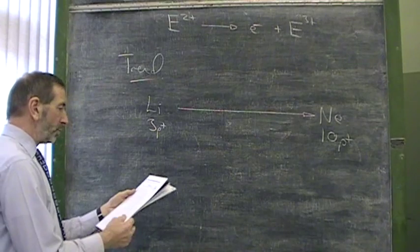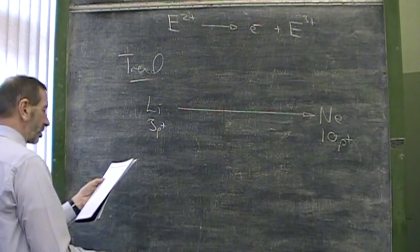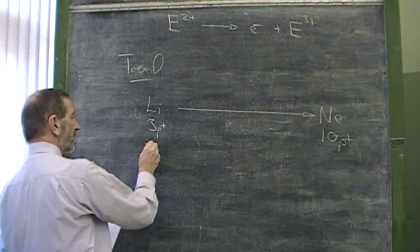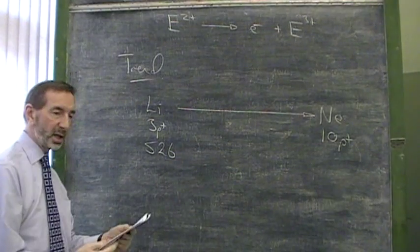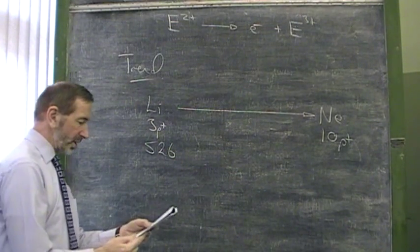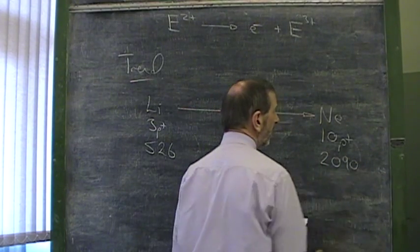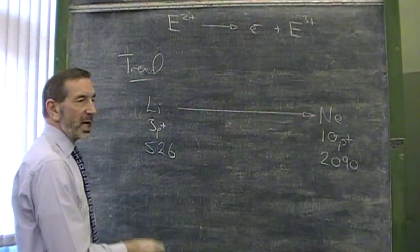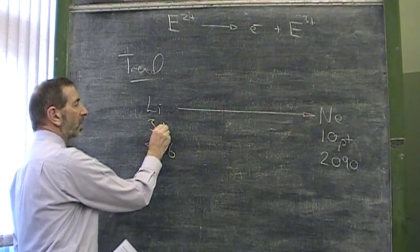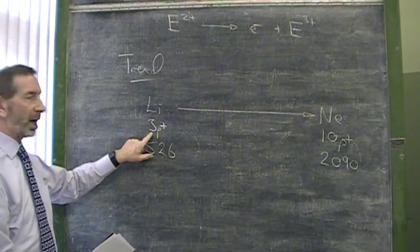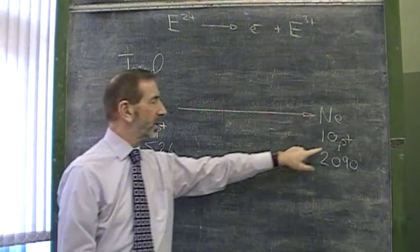In fact, the values are here. To remove a mole of electrons from lithium requires 526 kilojoules per mole, whereas in the case of neon, it's four times that. It's two times that. So once again, that's because the outer electron in lithium is not held as strongly as the outer electron in neon.